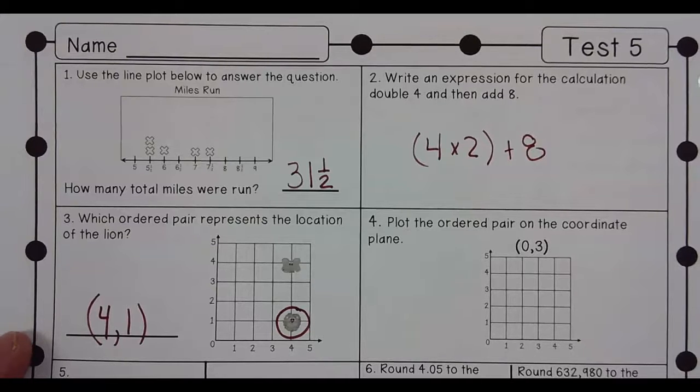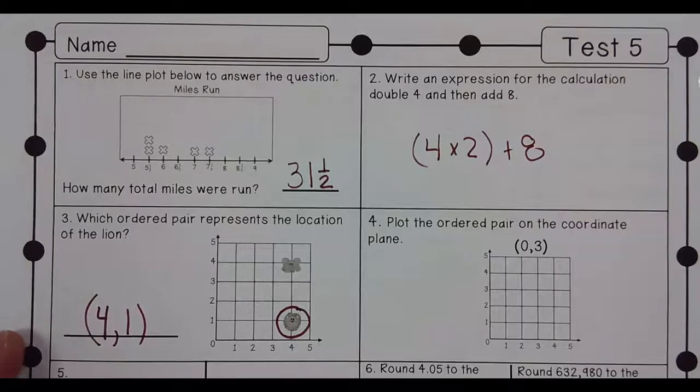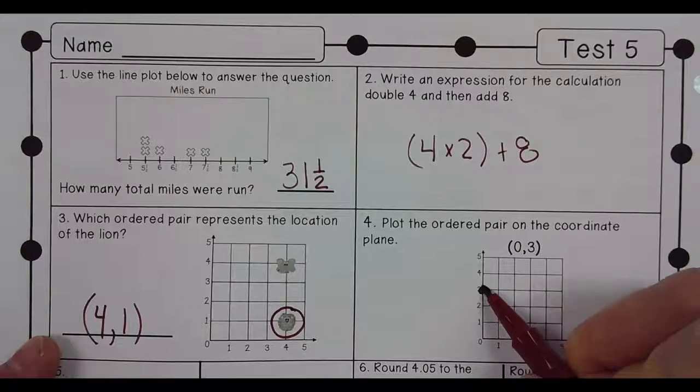Plot the ordered pair on the coordinate plane. Zero, three. So you're going to go over zero, up three. Here's zero, three.